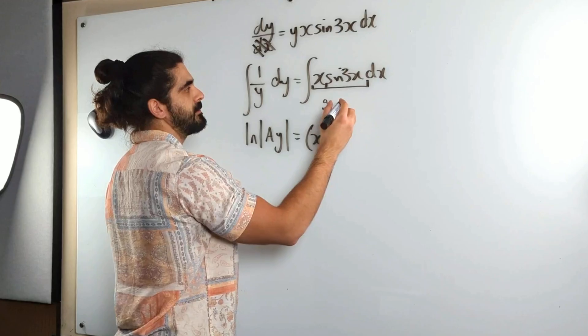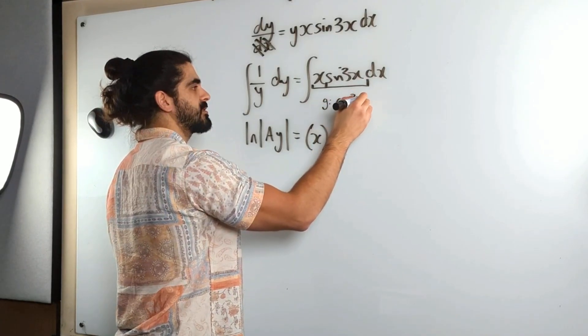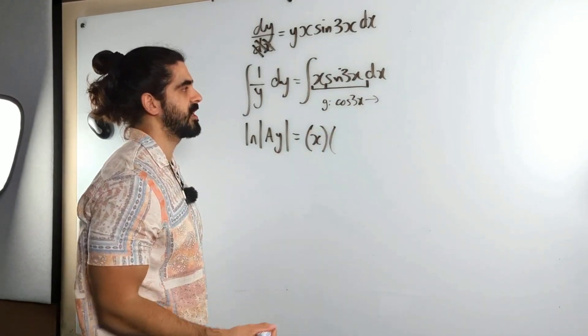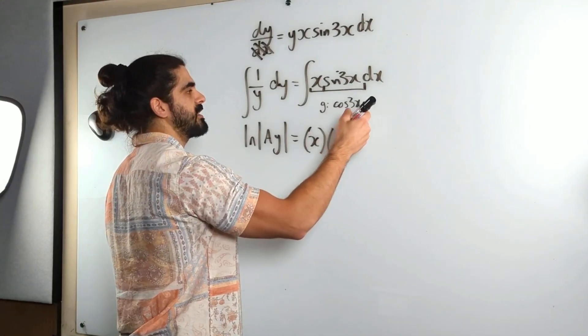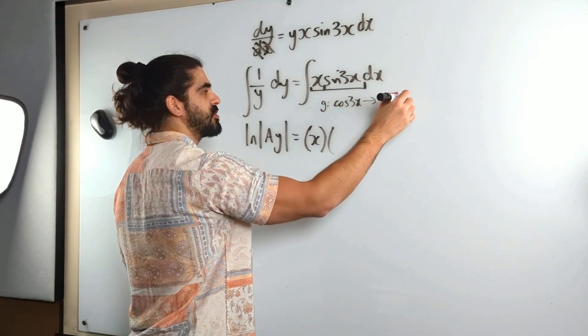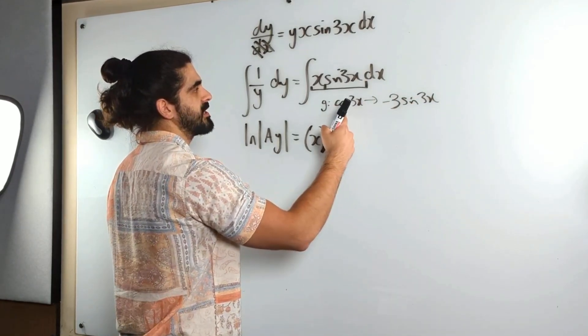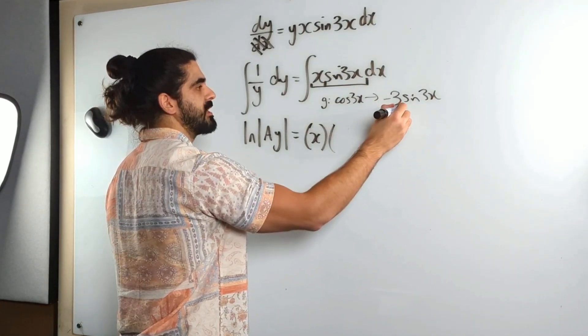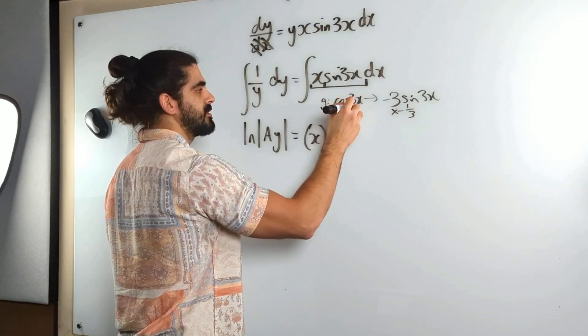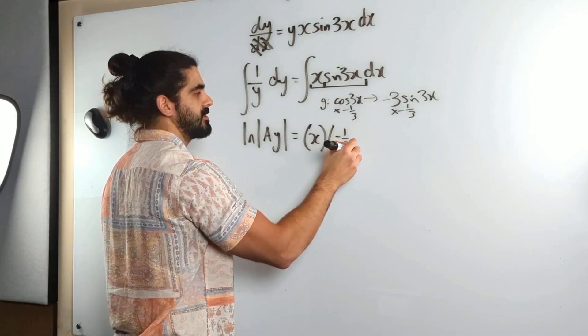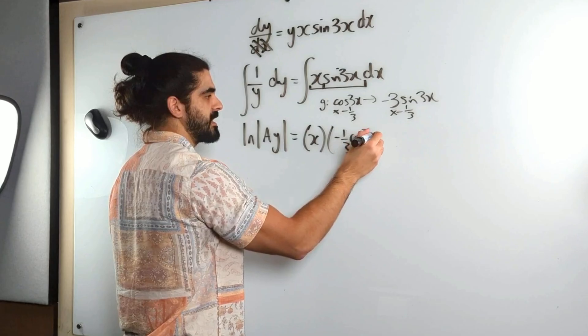This is a recognition question. My guess is cos 3x. Differentiate that to check. Cos 3x, differentiate the angle is 3. Cos differentiates to minus sine. Keep the angle the same, which means that integrates to this. But we just wanted sin 3x, so we times both sides by minus a third. So we get minus a third cos 3x.